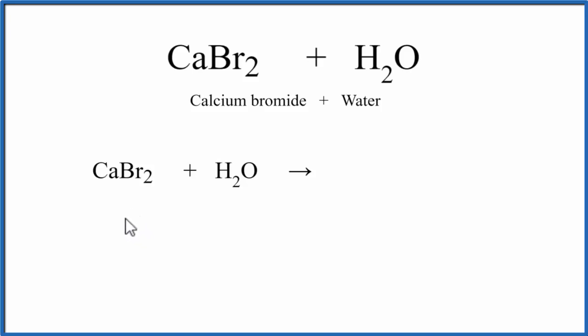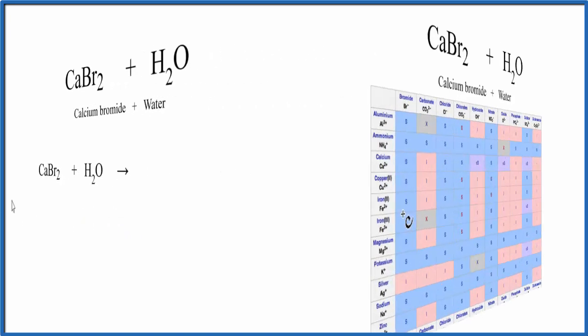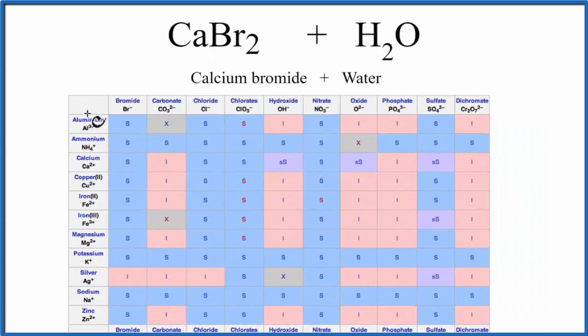We should check, however, on a solubility table just to make sure. So here's our solubility table, and the positive ions there on the left, the cations they're called, and we'll go down, and here's calcium.